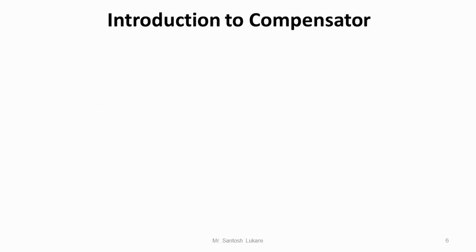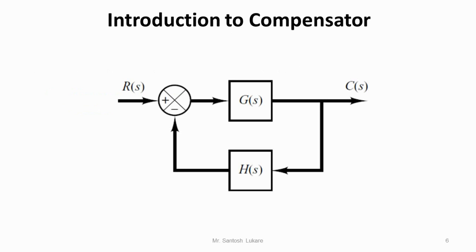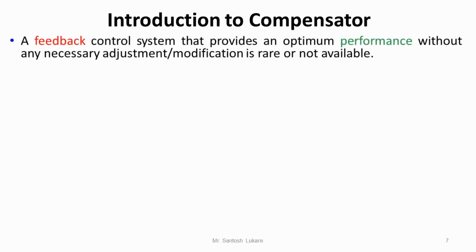Before going to the actual compensator basics, we will revise the feedback control system. This is the block diagram of the feedback control system where G(s) is the plant, H(s) is the feedback which takes care of the measurement of the output of the system or the plant, and R(s) is the set point or the desired input which is compared with the actual output of the plant C(s). This feedback control system without any necessary adjustments or modifications will not provide the desired or optimum performance.